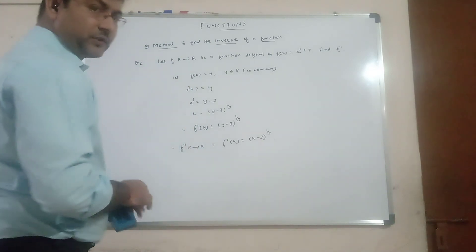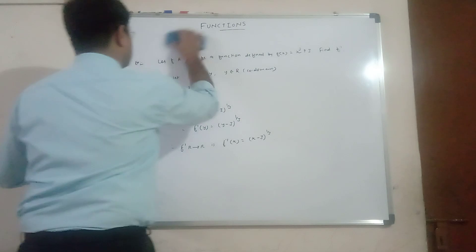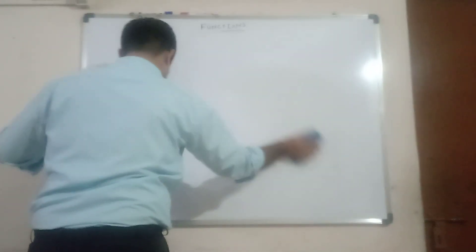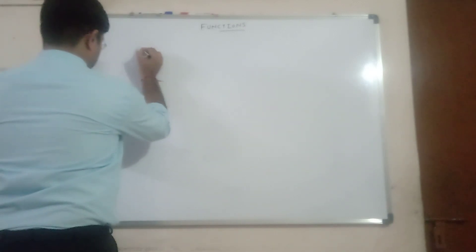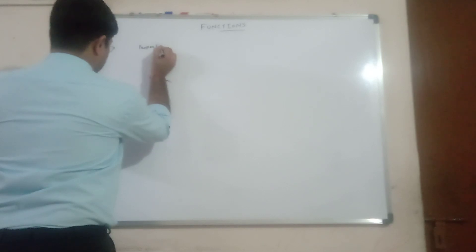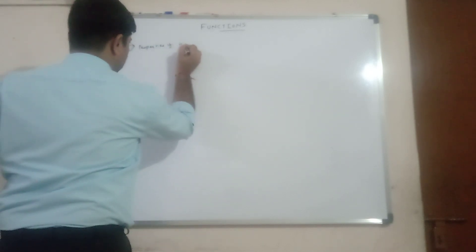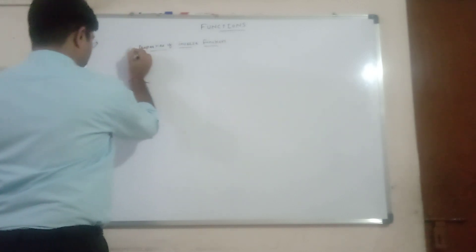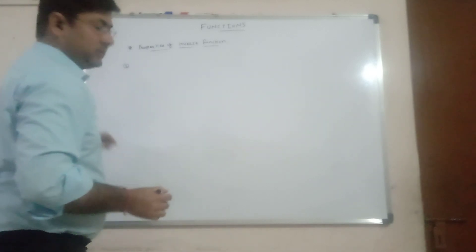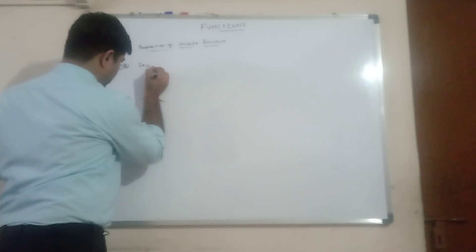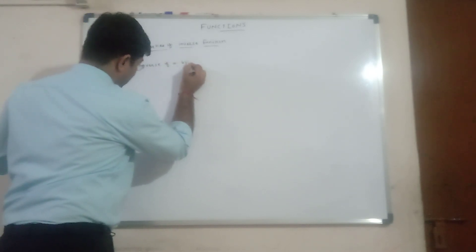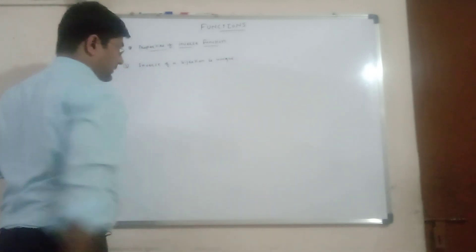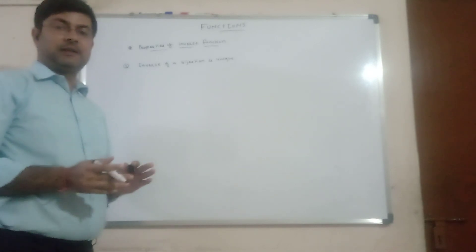Now let us study some properties of the inverse of a function. Property 1: the inverse of a bijection is unique. A bijection is a one-one onto function. Property 2: the inverse of a bijection is also a bijection — if f is a bijection, then f inverse is also a bijection.